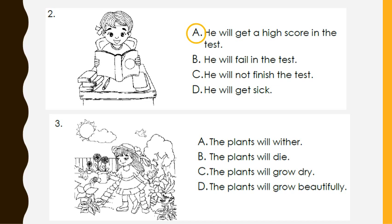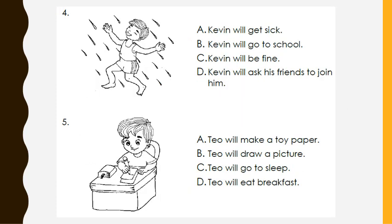Number three. The girl is watering the plants. What will happen next? A. The plants will wither. B. The plants will die. C. The plants will grow dry. D. The plants will grow beautifully. That's right. The plants will grow beautifully. Number four. The boy is playing under the rain. What will happen next? A. Kevin will get sick. B. Kevin will go to school. C. Kevin will be fine. D. Kevin will ask his friends to join him. Kevin will get sick.